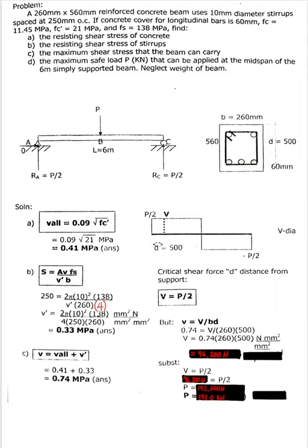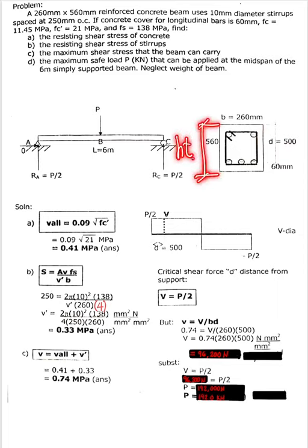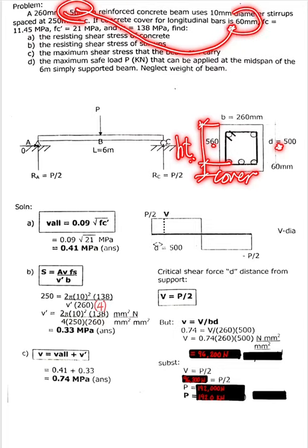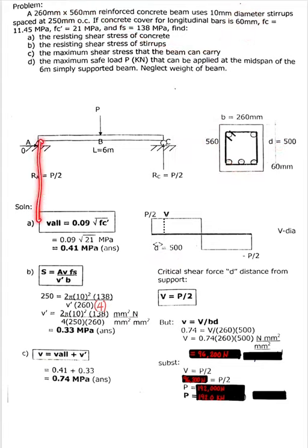For letter D, find the maximum safe load P for the simply supported beam with a 6-meter span. Solve for the critical shear force at a distance d from the support. To find d: height of the beam minus the cover, so d equals 560 minus 60, giving d equal to 500 mm.